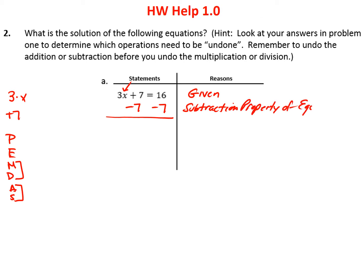The subtraction property of equality simply states that if you have two expressions that are equal and you take the same amount from both sides, they're still going to be equal. Plus 7 and minus 7 add up to 0, so I've eliminated the plus 7 and I'm left with 3x on this side. On the other side, 16 minus 7 is 9. So we've changed the equation into 3x = 9.